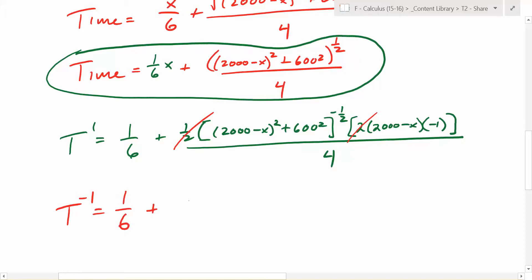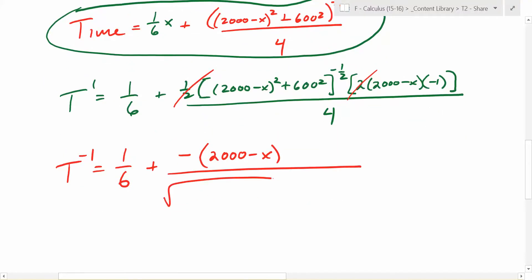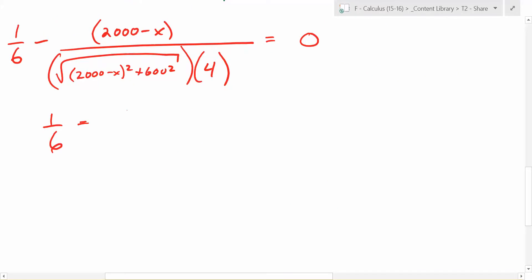So we could also put that negative a half on the bottom. So we have one equals one-sixth plus what here? What's left on top? Negative 2,000 minus X. And what's on the bottom now? The square root of what? That negative power drops it to the bottom, plus 600 squared. But there's also something else down there. What was already down there? Four.